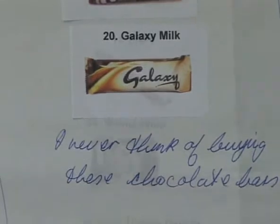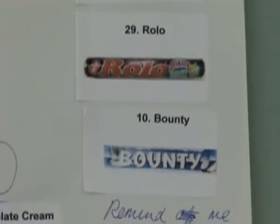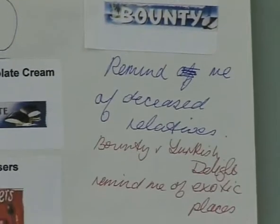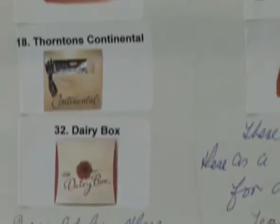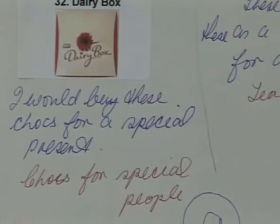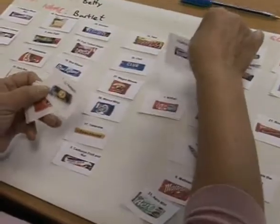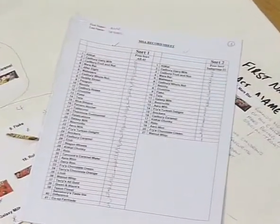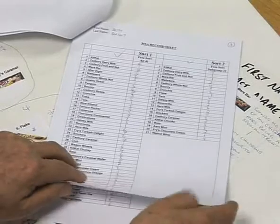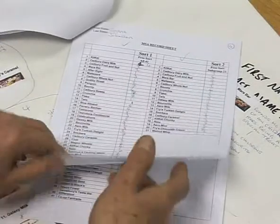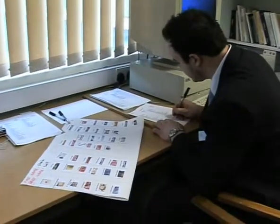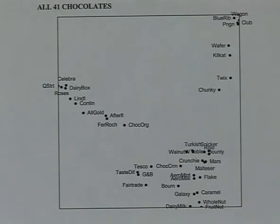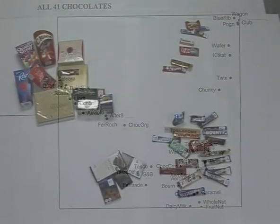Each person may be different, but there will be some overlap because they come from the same broad social group. We can take these different personal mental maps and put them into a computer. We do this by taking each person's judgement and using them to give a code for each chocolate. We can then combine these codes across any mixture of people. The computer then gives us a summary of the distinctions people make, as if it were a combination of all their mental maps. We can turn this computer printout into a map of actual chocolates.